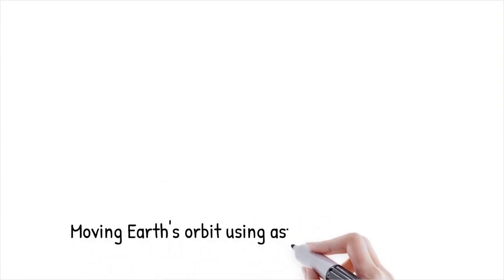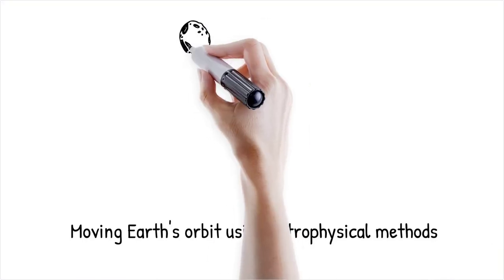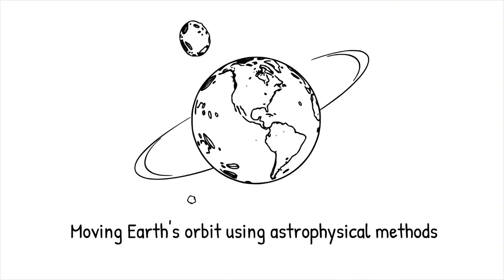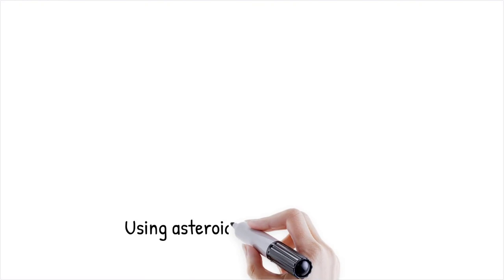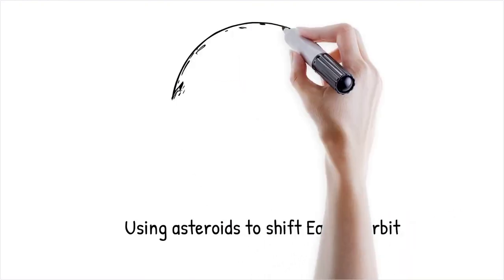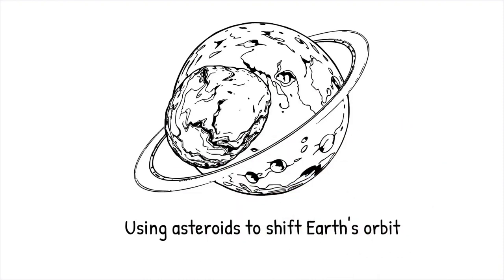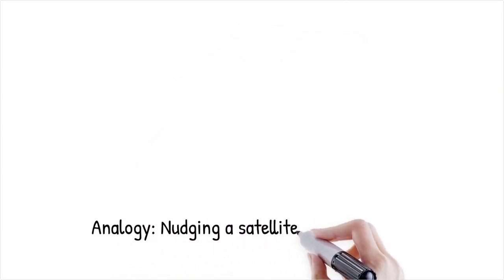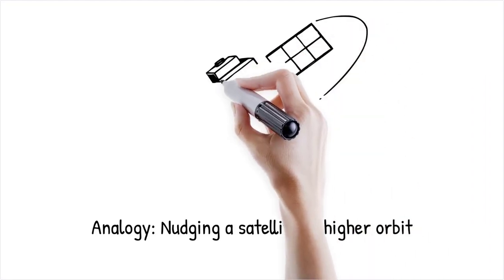One proposed long-term survival strategy is using gravitational interactions or asteroid flybys to gradually shift Earth's orbit outward over millions of years. This concept, known as stellar engineering, suggests that repeated close encounters with large asteroids or controlled thrusts could push Earth into a safer, wider orbit before the sun becomes a red giant. However, such efforts would require technological advancements far beyond current capabilities. Scientists have theorized that using a large asteroid as a gravitational tugboat could move Earth's orbit outward by 1.5 AU over the next billion years, keeping it in a habitable zone longer. This is like slowly nudging a satellite into a higher orbit using controlled thrusts. It requires precise calculations, but is theoretically possible.